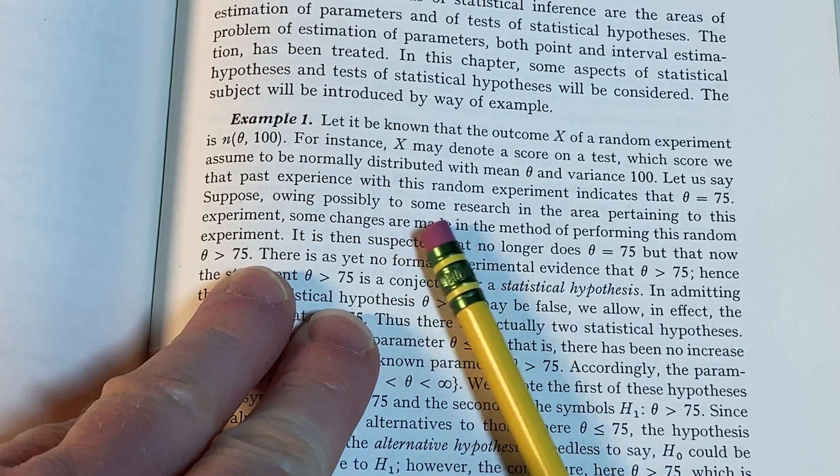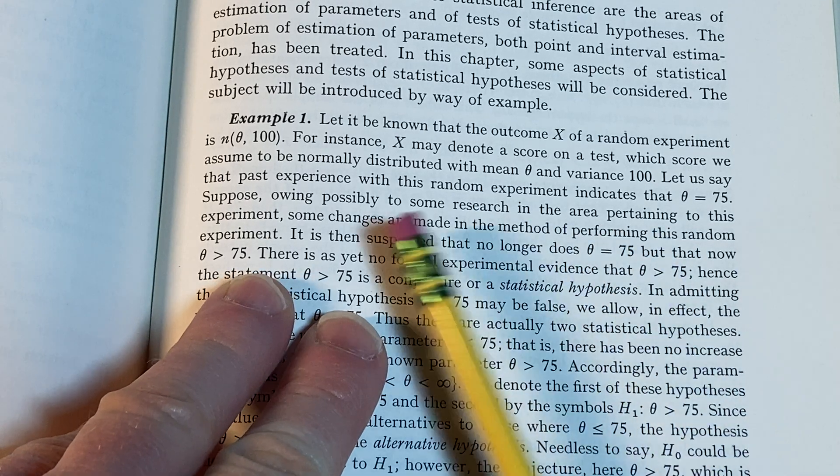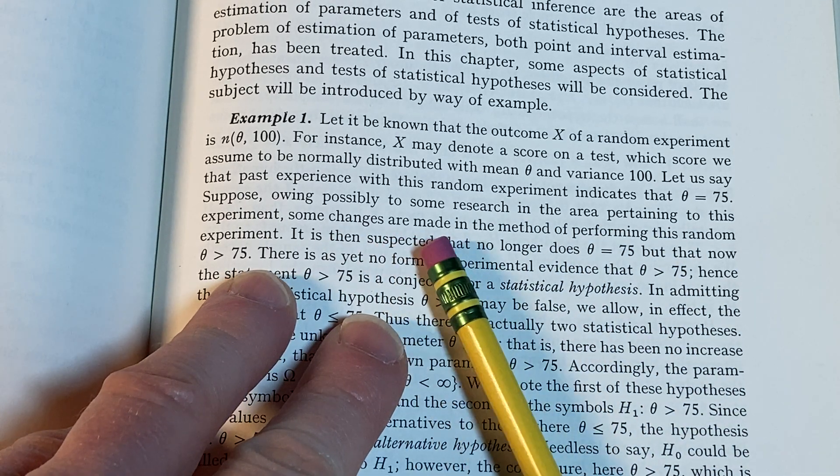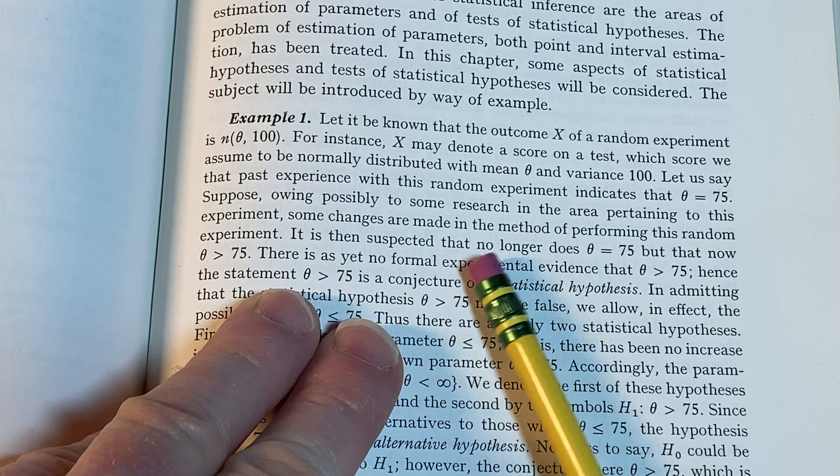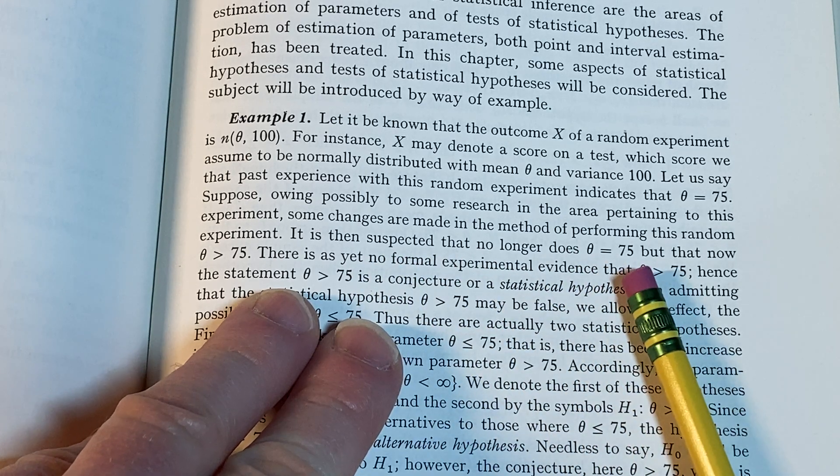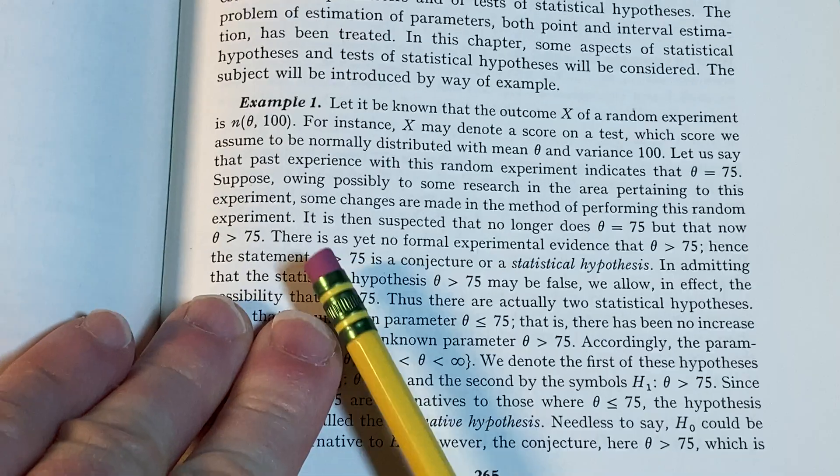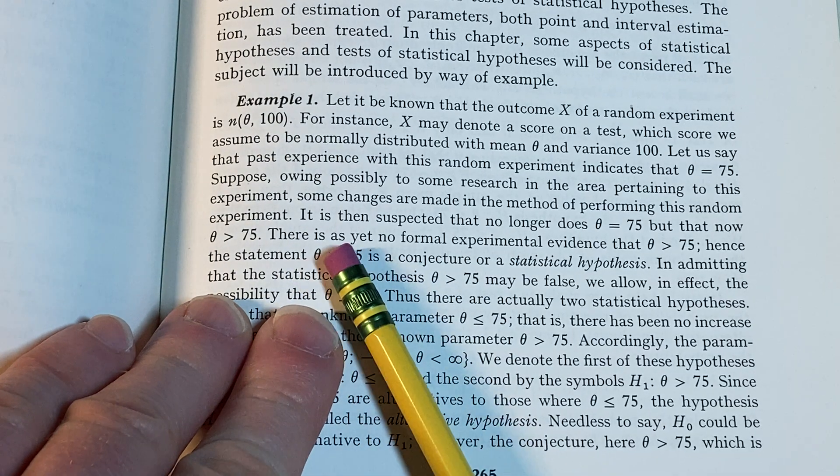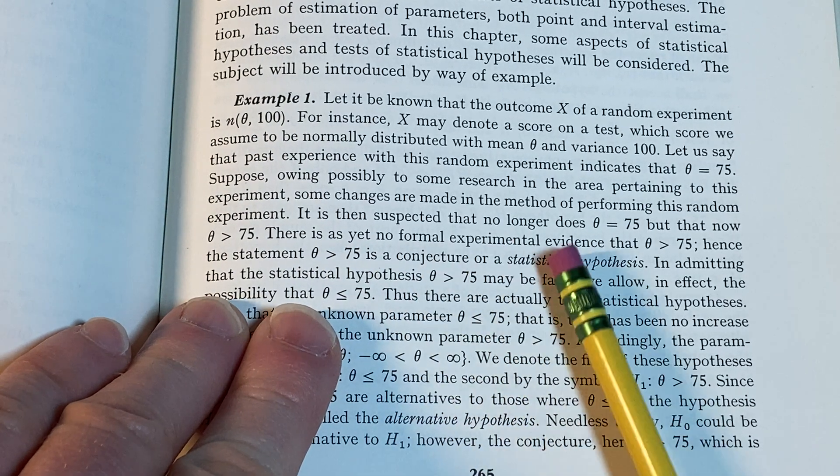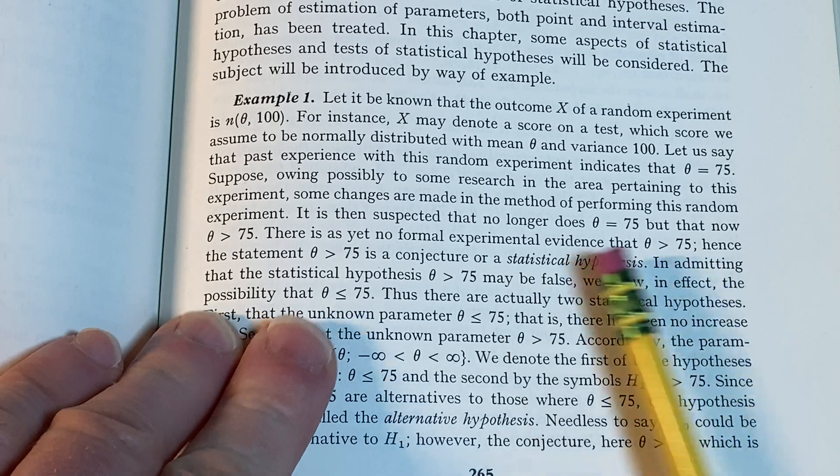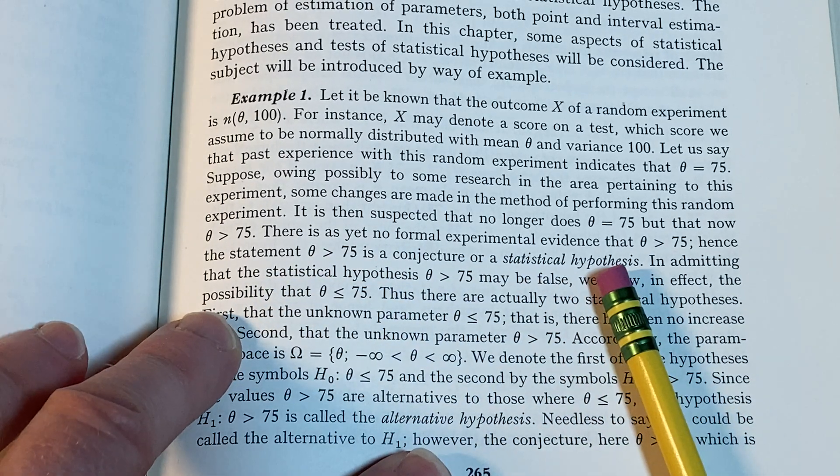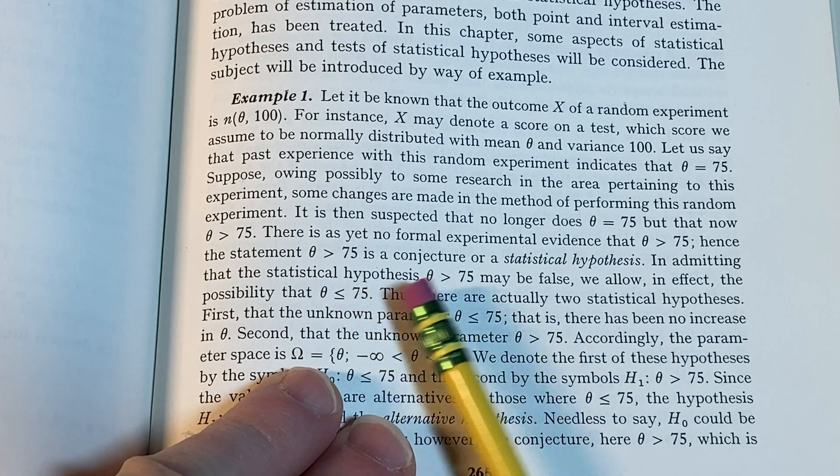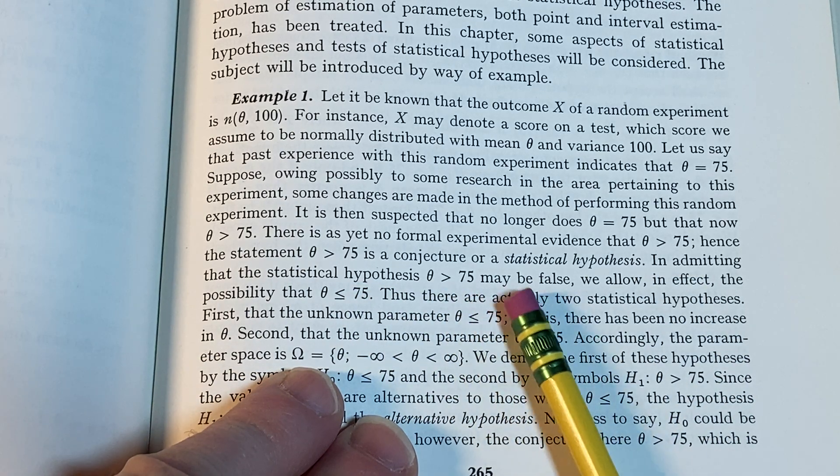Suppose owing that possibly to some research in the area pertaining to this experiment, some changes are made in the method of performing this random experiment. It is then suspected that no longer does θ equal 75, but now that θ is greater than 75. There is as yet no formal experimental evidence that θ is bigger than 75. Hence the statement θ > 75 is a conjecture or a statistical hypothesis.